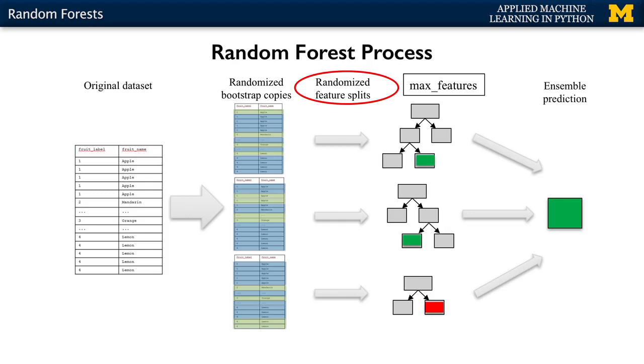When building a decision tree for a random forest, the process is almost the same as for a standard decision tree, but with one important difference. When picking the best split for a node, instead of finding the best split across all possible features, a random subset of features is chosen and the best split is found within that smaller subset. The number of features randomly considered at each stage is controlled by the max_features parameter. This randomness — from bootstrap sampling and restricted feature subsets — virtually guarantees that all decision trees in the random forest will be different.